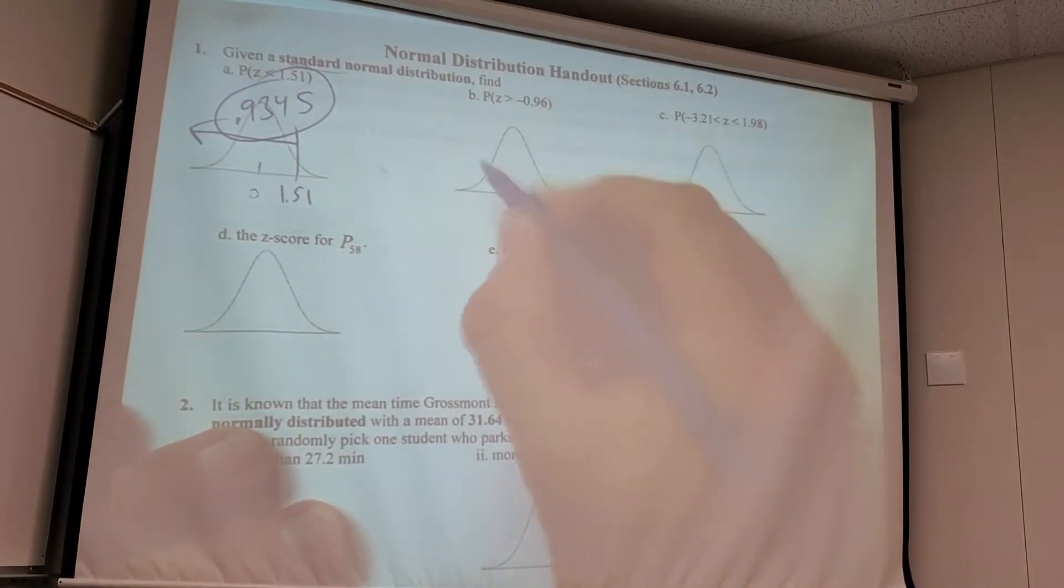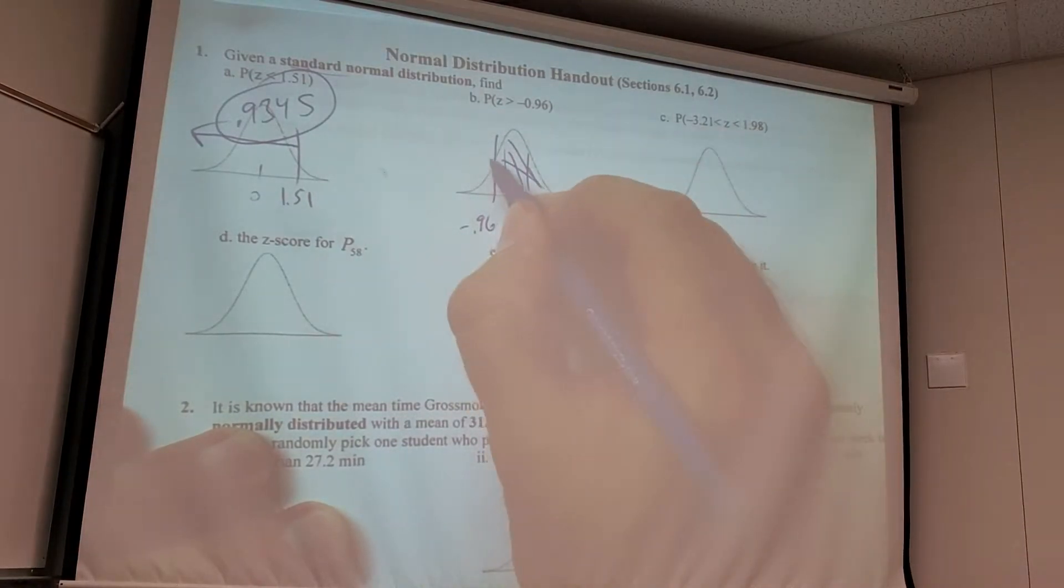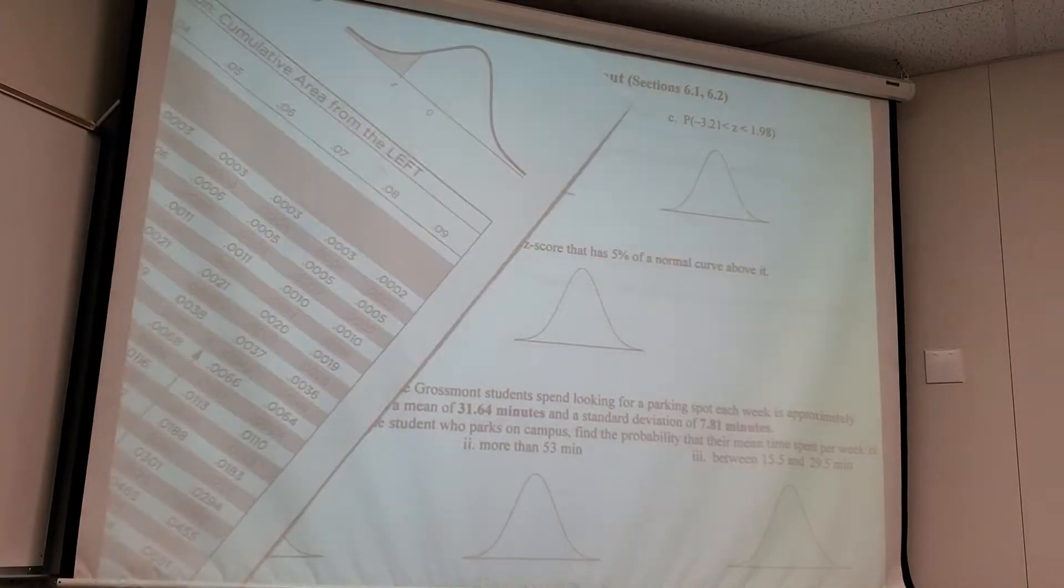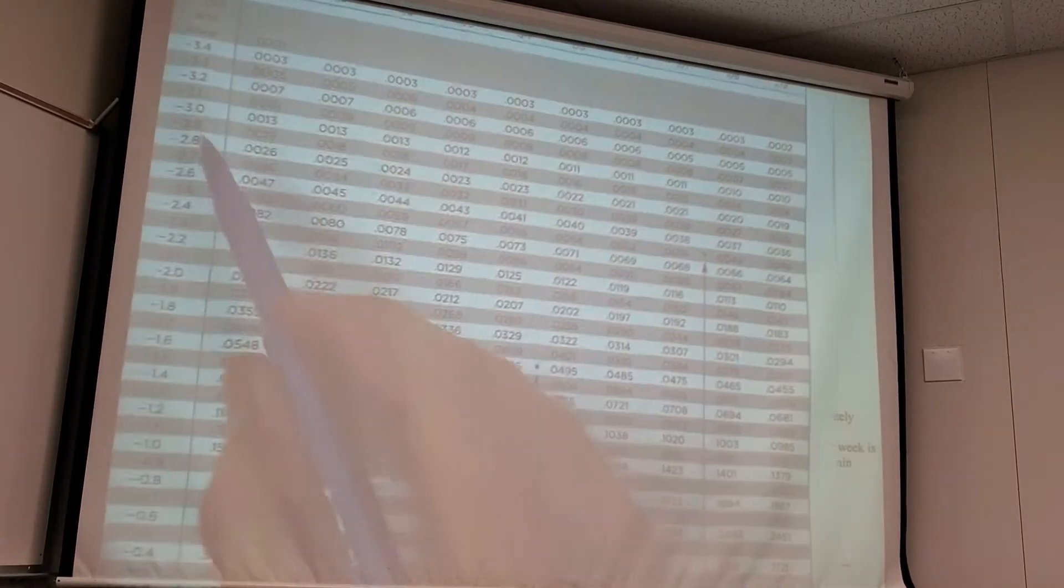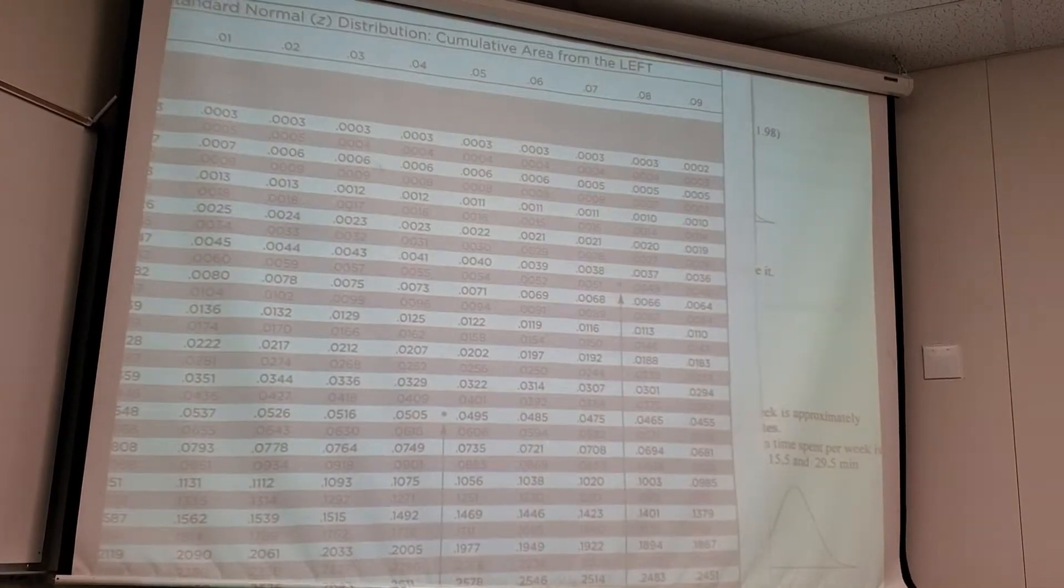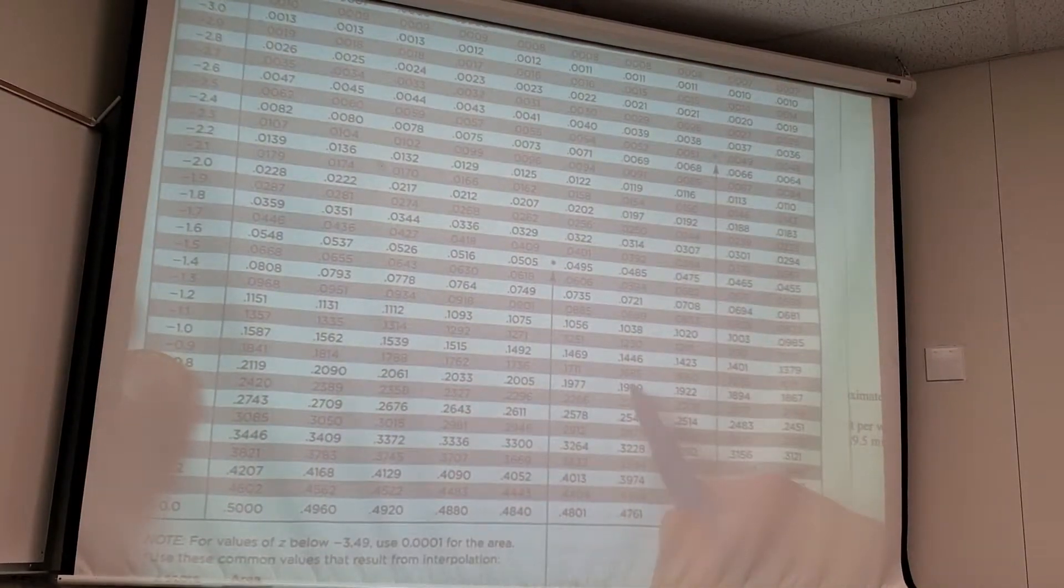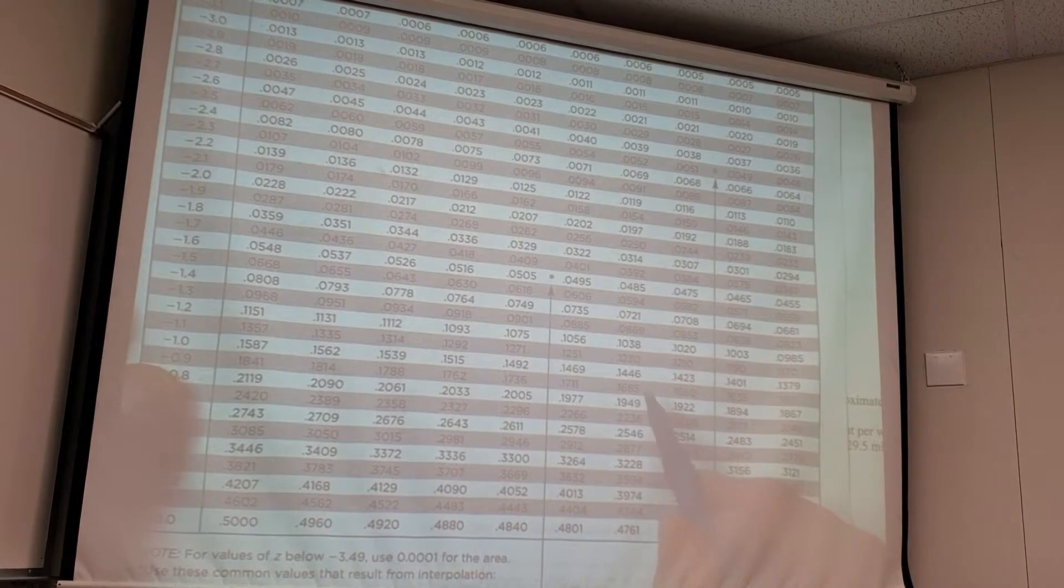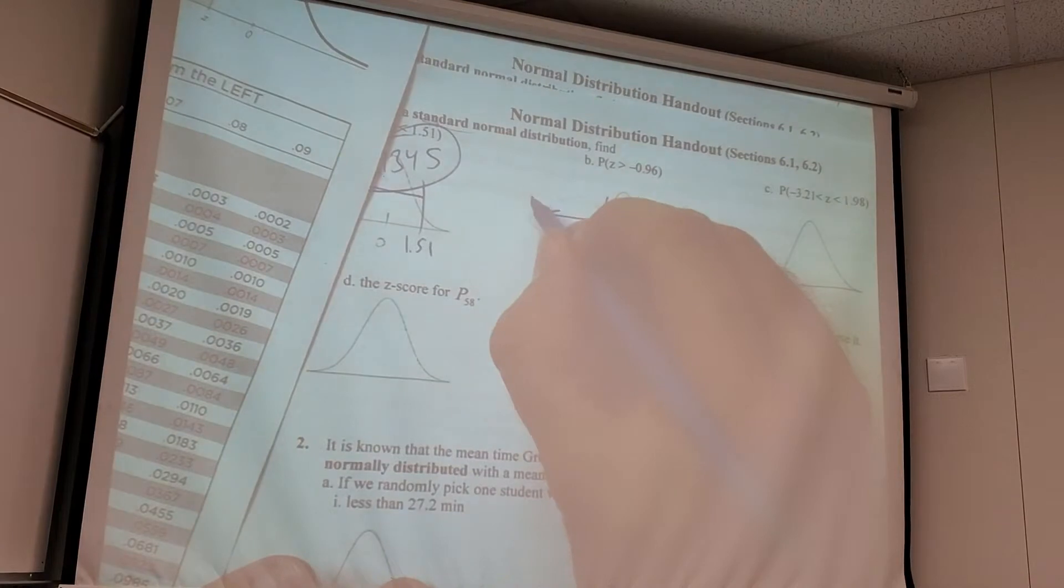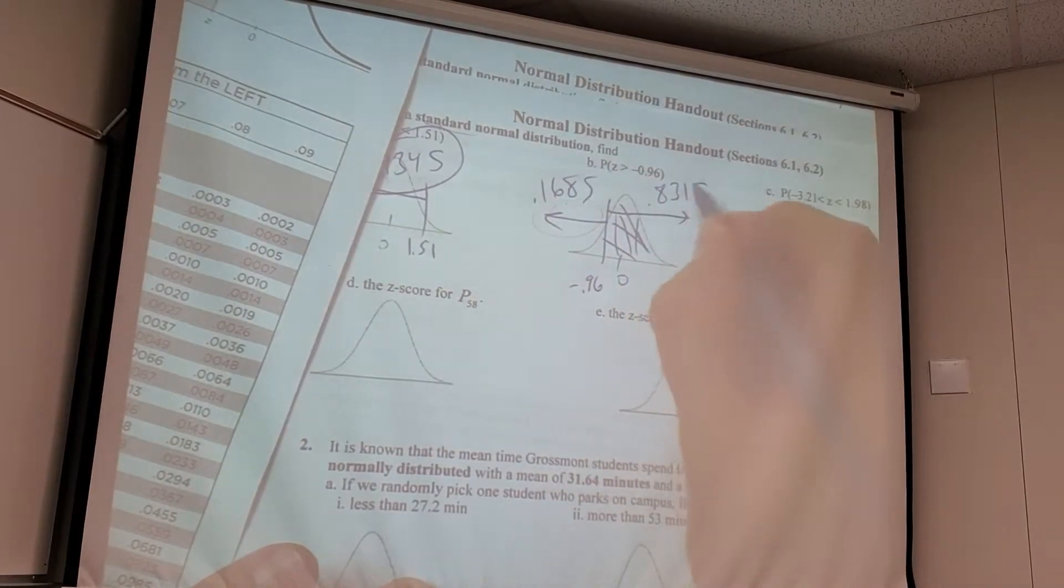This one, I want this area. I can get this area directly, right? So I'm going to look at negative 0.96. What do you guys get? What do I get over here? Negative 0.96. Man, I hurt you guys today. You guys don't want to work with me at all? 0.1685, right? Yeah. So this is 0.1685. So what's my answer? 0.8315.